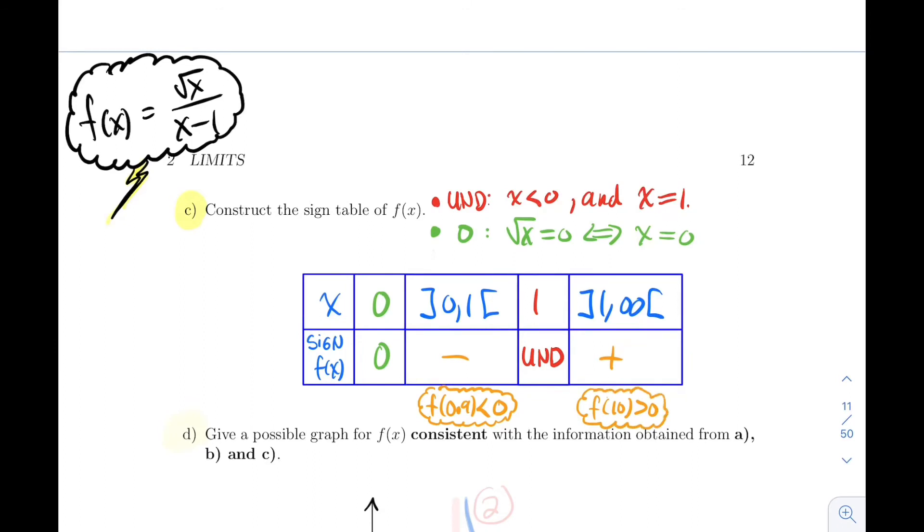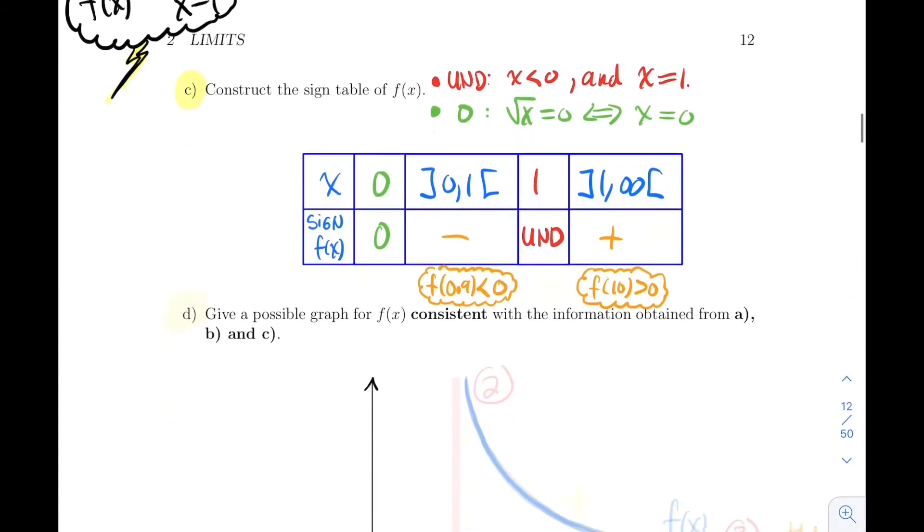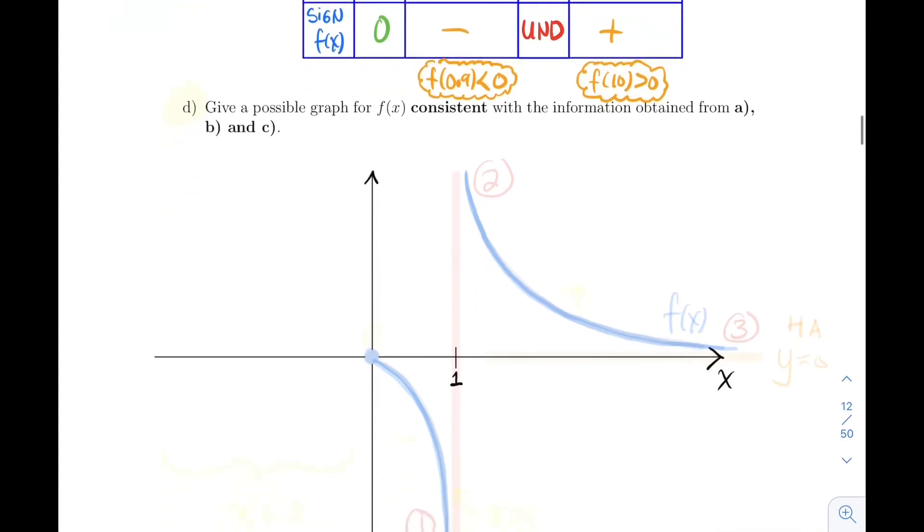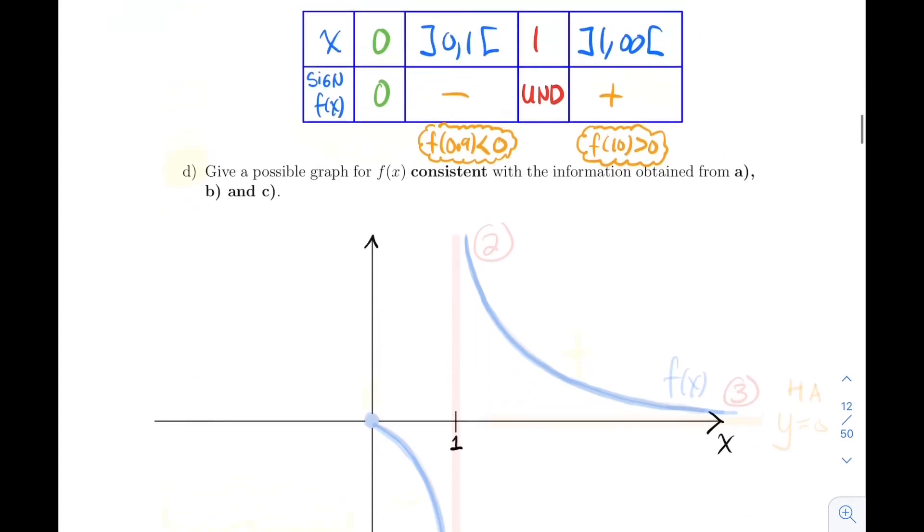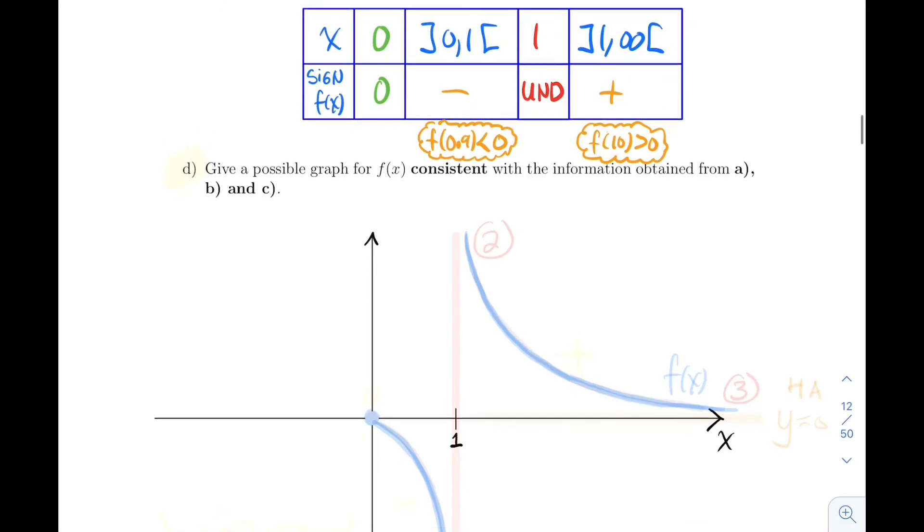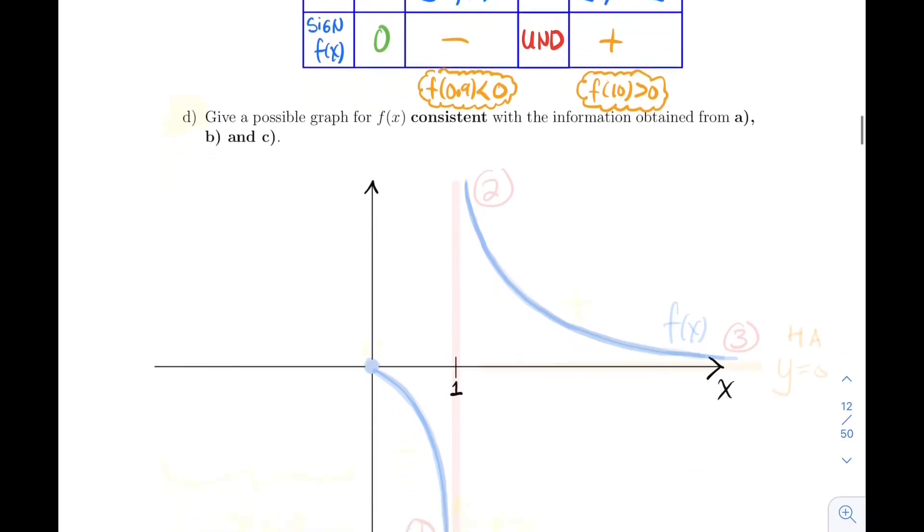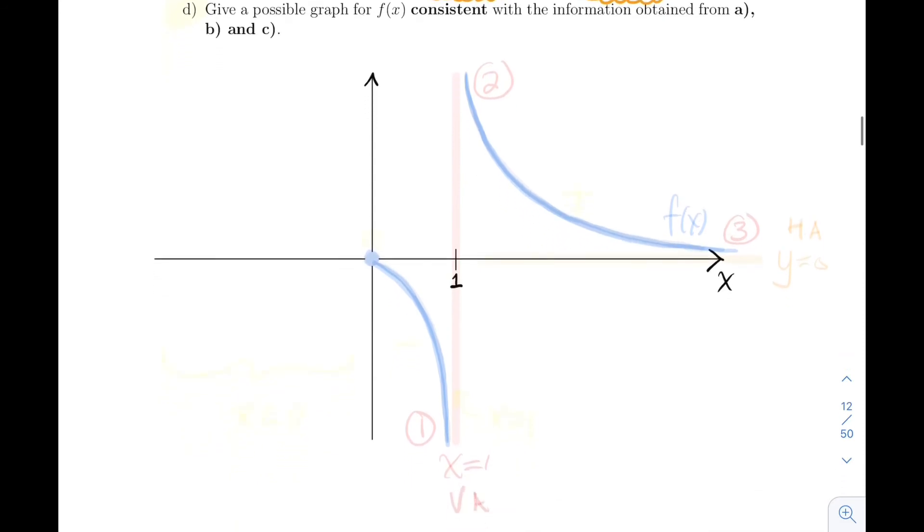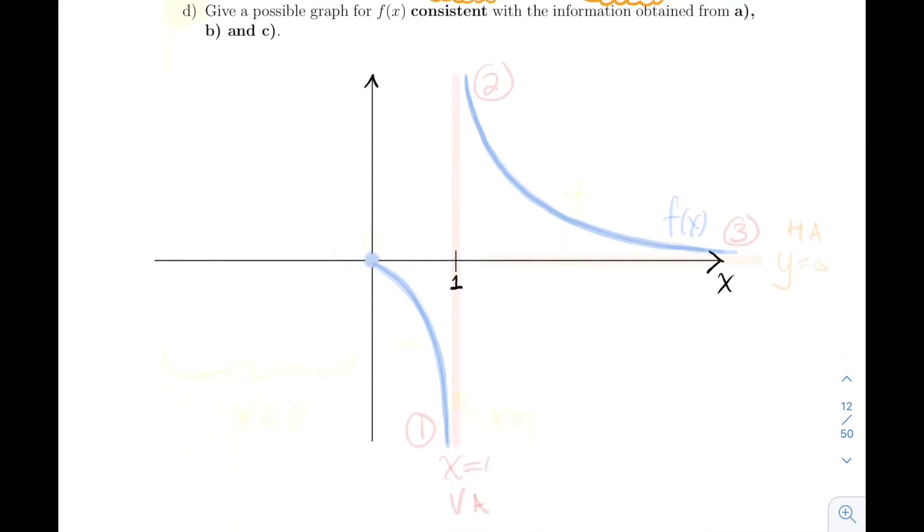If we're going to draw this, we need to draw a function that is initially zero at zero, then it will be below the x-axis, then undefined at 1, and then above the x-axis. So let's do that right away, let's draw a potential graph. Using everything, and this is really important here, you want to draw something that is consistent with everything that we've computed so far, domain and everything.